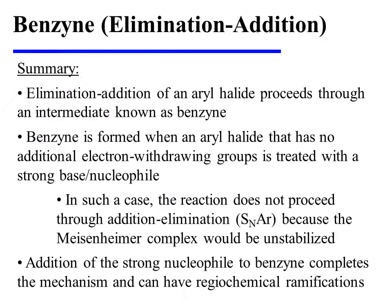In summary, elimination-addition of an aryl halide proceeds through an intermediate known as benzyne. Benzyne is formed when an aryl halide that has no additional electron-withdrawing groups is treated with a strong base or nucleophile. In such a case, the reaction does not proceed through an addition-elimination pathway, or SNAr, because the Meisenheimer complex would be unstabilized. Addition of the strong nucleophile to benzyne completes the mechanism and can have regiochemical ramifications.